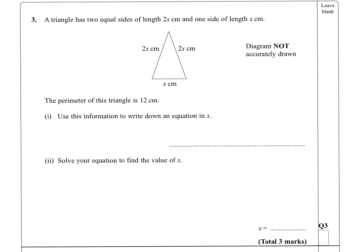The perimeter of this triangle is 12. Use this information to write down an equation in x. So the perimeter, going round the outside: 2x plus another 2x plus x equals 12. So that's our equation.